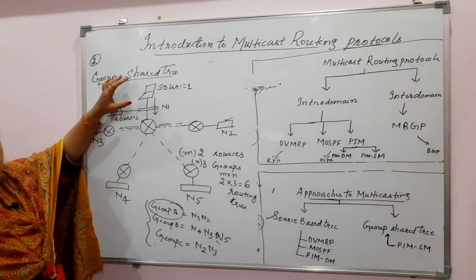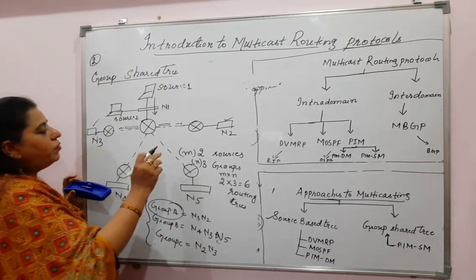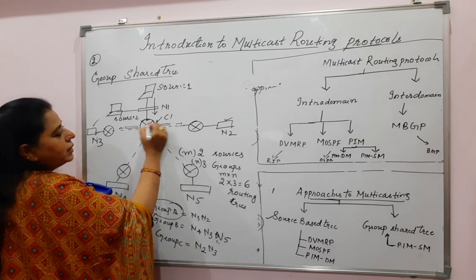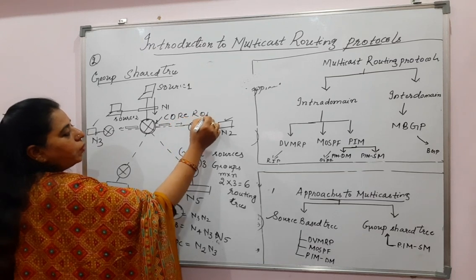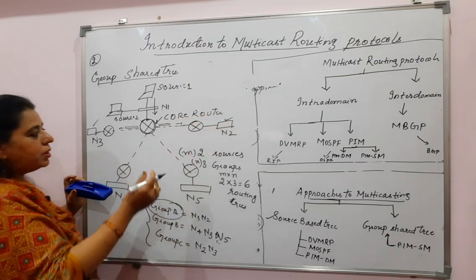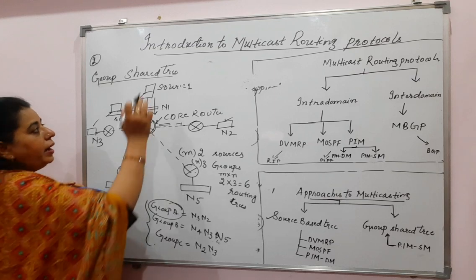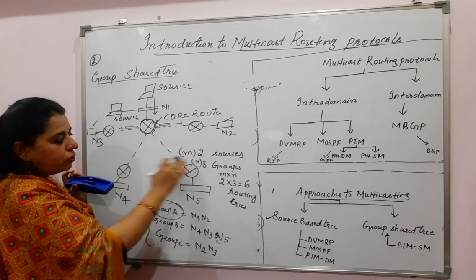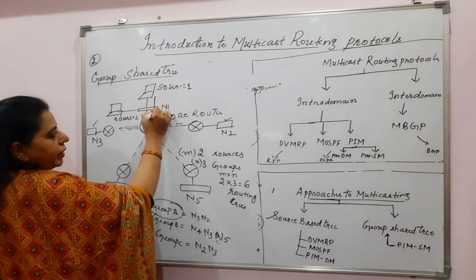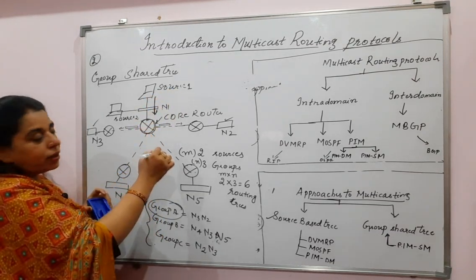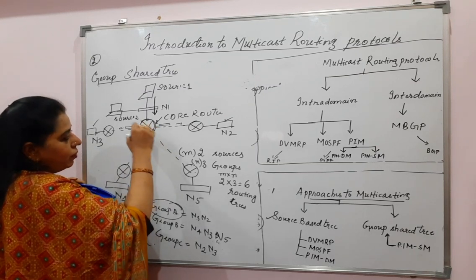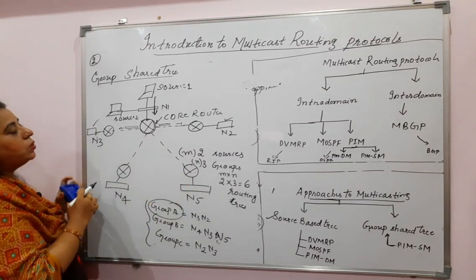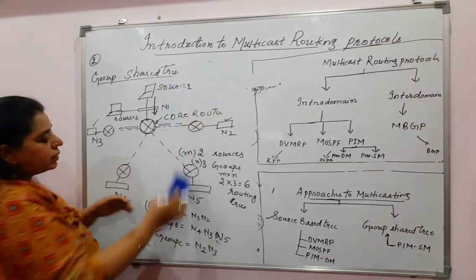In the group shared tree approach, the word 'source' is not used in the tree. We have a tree only from the core router. One router in the autonomous system is designated as the core router. Every source wanting to send a multicast packet first sends it to the core router, and the core router takes care of forwarding the multicast packet to the different groups.